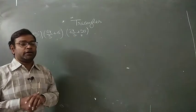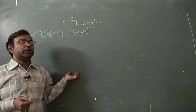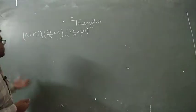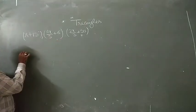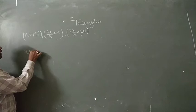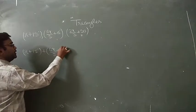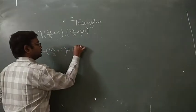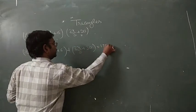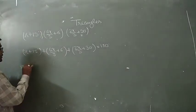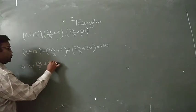The question says to prove that the triangle is an equilateral triangle. Using the angle sum property, all three angles are equal to 180 degrees: x plus 15 degrees, 6x upon 5 plus 6 degrees, and 2x upon 3 plus 30 degrees equals 180 degrees.